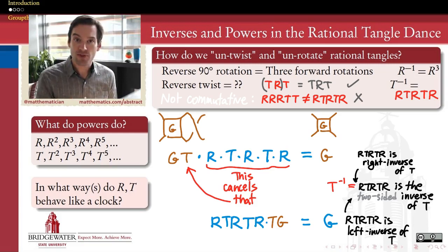And that makes the operation an associative operation. So we pass the associativity test, but we fail the commutativity test. And that gives us a bit of a clue into what the structure of T's and R's look like in the rational tangle dance.